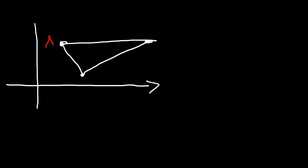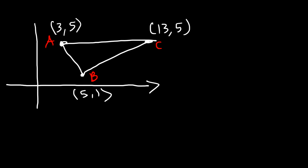Let's say this is point A, B, and C. Point B is located at (5, 1), A is located at (3, 5), and C is located at (13, 5). This figure is not drawn to scale. Using these points, how can you use slope to prove that this is a right triangle? In order for it to be a right triangle it must have a right angle, which means line AB has to be perpendicular to line BC. We can calculate the slopes of these two lines and prove that they're negative reciprocals of each other, then show that this is a right triangle.